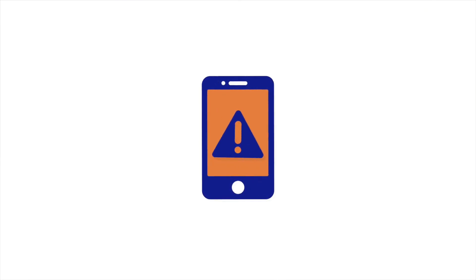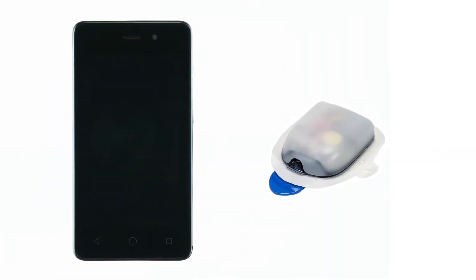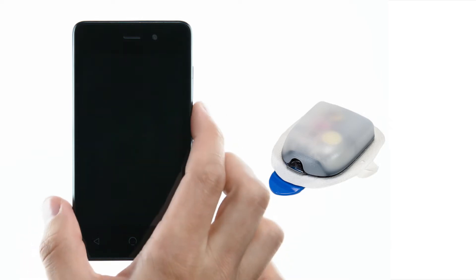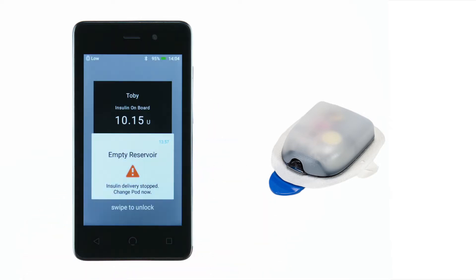The Omnipod DASH system has several ways to notify you if something needs your attention or action. The pod and PDM get your attention with beeps or a continuous tone. When you hear a sound, turn on your PDM to receive your message.